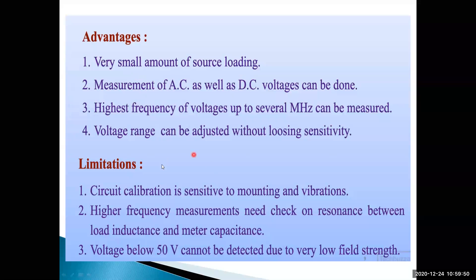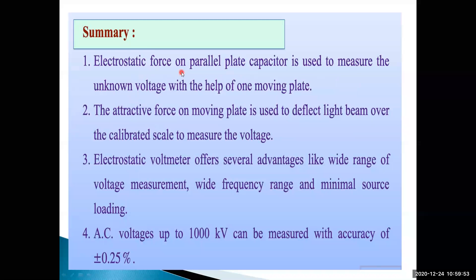Summary: electrostatic force on a parallel plate capacitor is used to measure unknown voltage with the help of one moving plate. The attractive force on the moving plate is used to deflect a light beam over a calibrated scale to measure voltages. The electrostatic voltmeter offers advantages like wide range of voltage measurement, wide frequency range, and minimum source loading. The AC voltage range up to 1000 kilovolts can be measured with accuracy of plus or minus 0.05 percent.